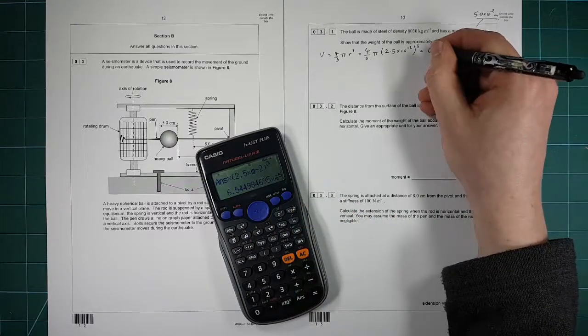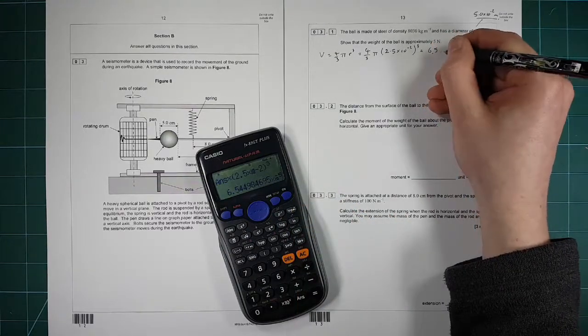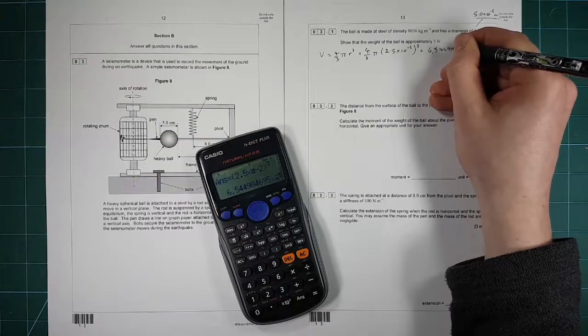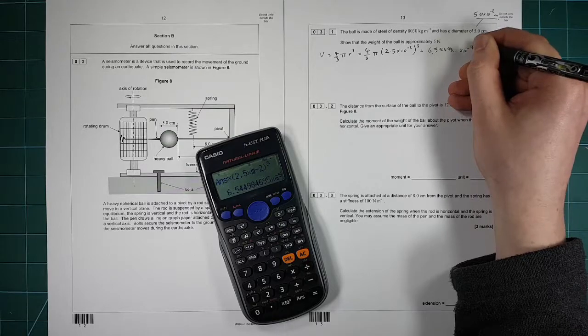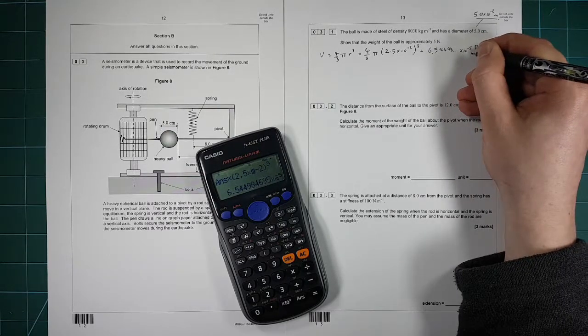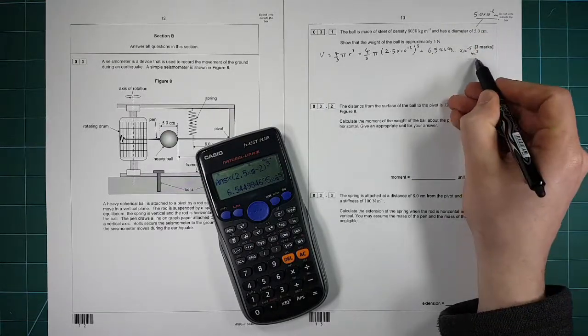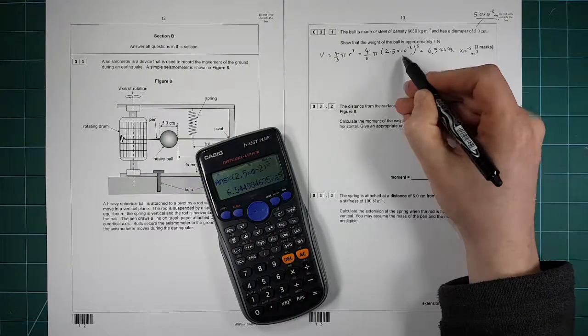So that is equal to 6.5449 dot dot dot times 10 to the minus 5, and the units there are meters cubed. And I've done it in meters cubed because I changed that to meters there.